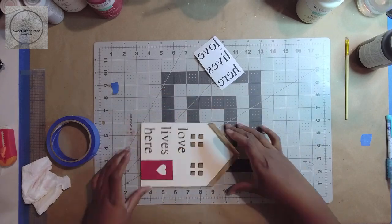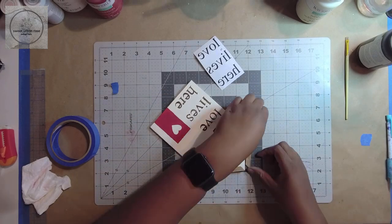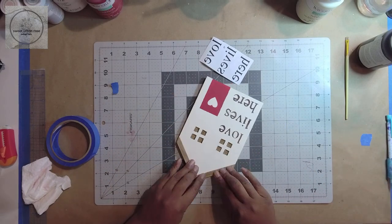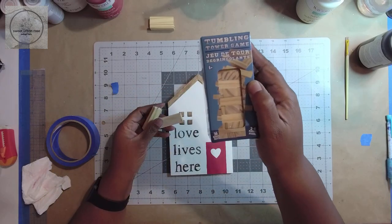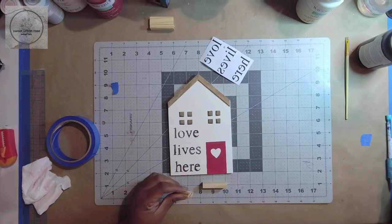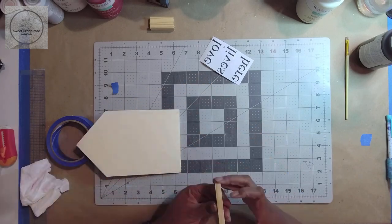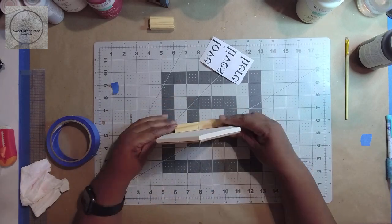Now it's time to assemble. First, I glued the roof pieces into place. To make it stand, I glued two tumbling tower pieces together end to end, then glued those to the bottom back of the house. I later added another set of blocks for a little more weight.